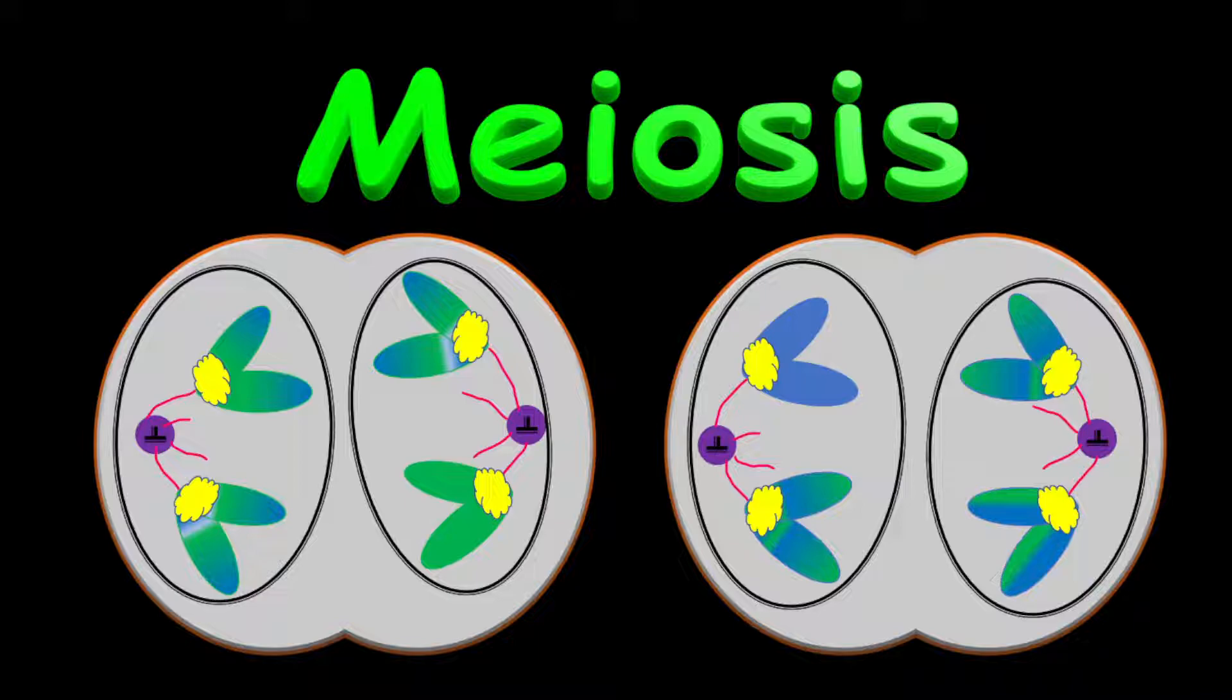Before I go through the phases of meiosis, I want to point out a few things. One is that meiosis involves two sets of divisions. In other words, there are two P-mats or there are two mitotic divisions. Additionally, meiosis results in the formation of four daughter cells. These daughter cells, they are genetically different from each other and also different from the parent cell.